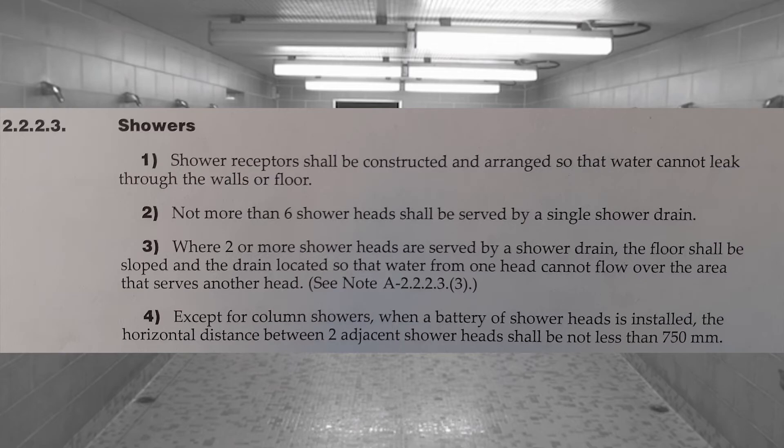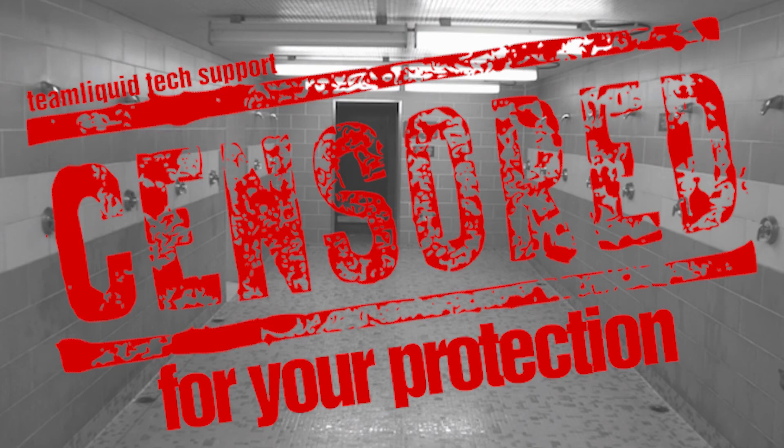Clause 2223 part 3: where two or more shower heads are served by a shower drain, the floor shall be sloped and the drain located so the water from one head cannot flow over the area that serves another head. Now this one may not seem evident, but the idea here is if I'm having a shower and Joseph is standing beside me having a shower, that anything that's coming off of my body doesn't end up pooling underneath his feet.